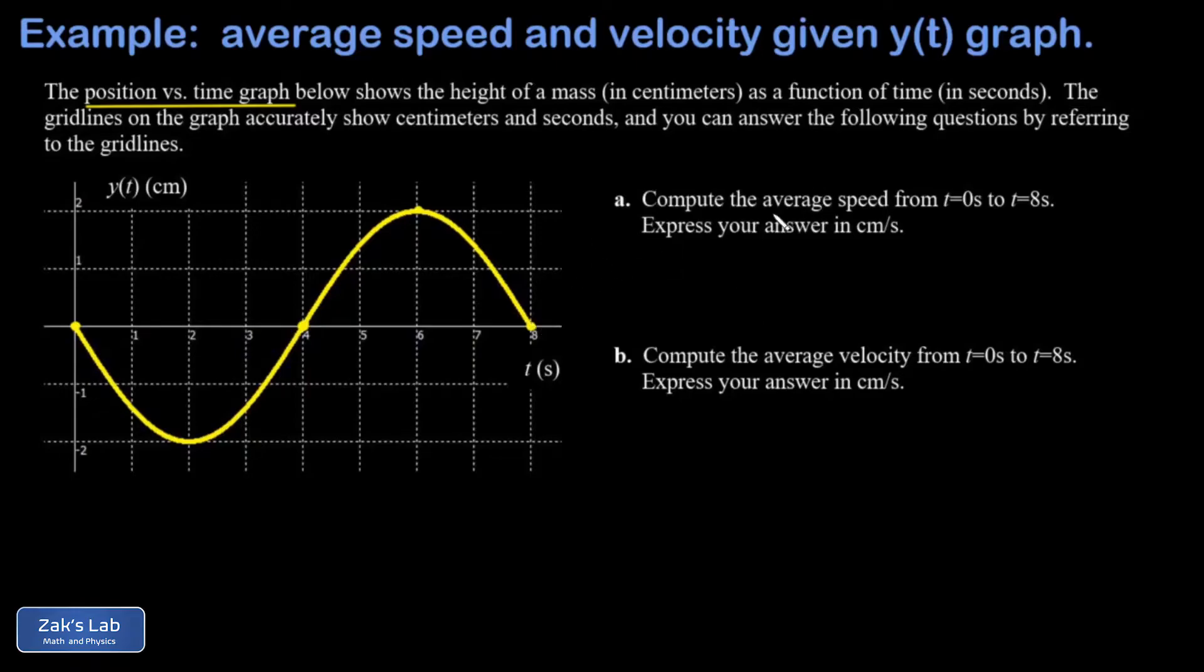Here I want to get the average speed on the time interval zero to eight, and then I want the average velocity on the time interval zero to eight. The difference between these two quantities is that for average speed, you have to count up the total distance traveled by this object. In part B, the average velocity calculation only depends on the final and initial position.